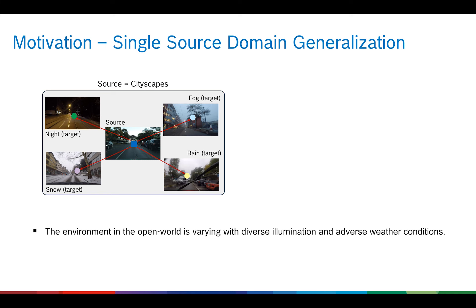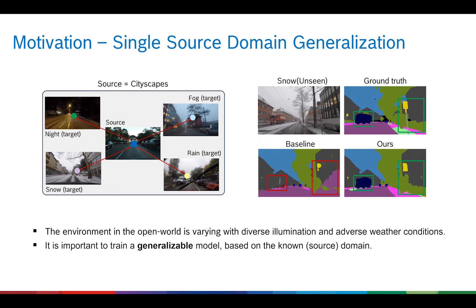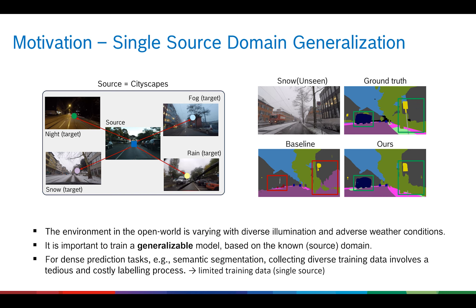In fact, it is known that neural networks do not generalize well on unseen domains. Thus, diversity of the training data plays an important role. However, dense prediction tasks such as semantic segmentation involve a time-consuming and costly labelling process. Therefore, it is of great interest to study single source domain generalization and maximize the usage of existing labelled source data.